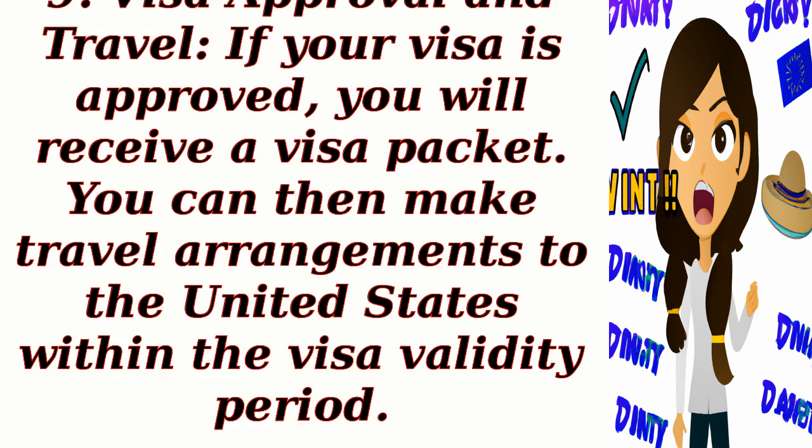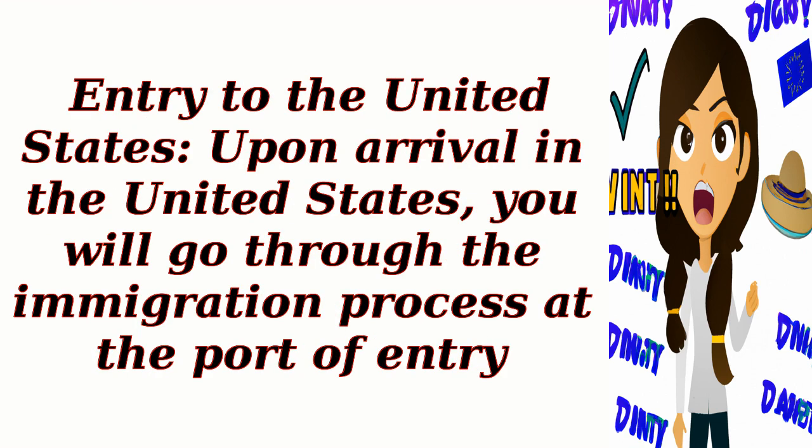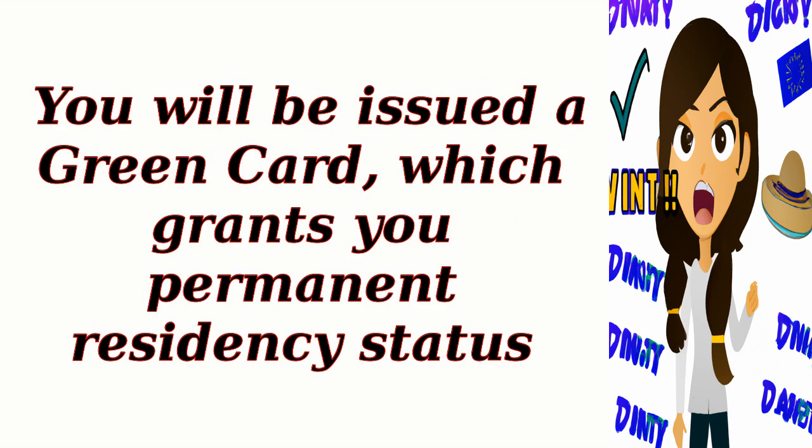Step 10: Visa approval and travel. If your visa is approved, you will receive a visa packet. You can then make travel arrangements to the United States within the visa validity period. Step 11: Entry to the United States. Upon arrival in the United States, you will go through the immigration process at the port of entry. You will be issued a green card, which grants you permanent residency status.